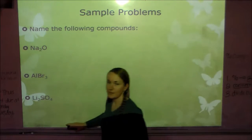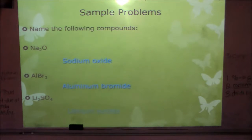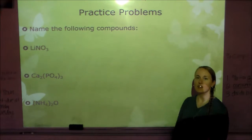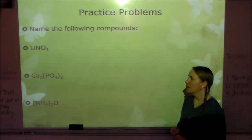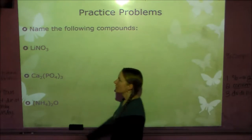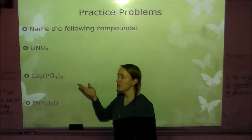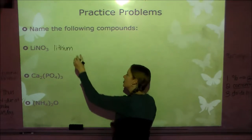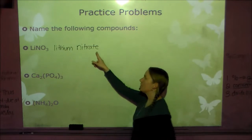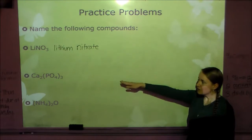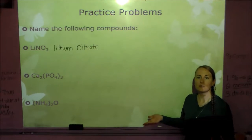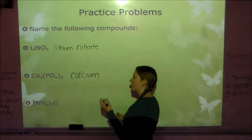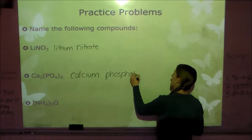Try these practice problems on your own, then check back. LiNO₃: NO₃ is a polyatomic ion so we don't change the ending. Li is lithium, and NO₃ is nitrate — so lithium nitrate. Ca₃(PO₄)₂: don't let the subscripts throw you off. Ca is calcium, and PO₄ is phosphate — so calcium phosphate. Last, NH₄O: NH₄ on your chart is ammonium, and oxygen as the second element becomes oxide. So it's ammonium oxide.